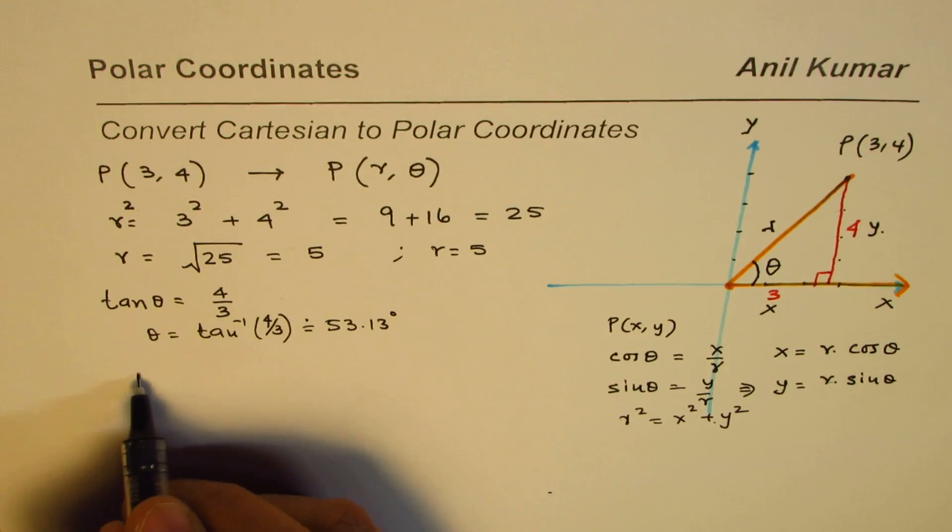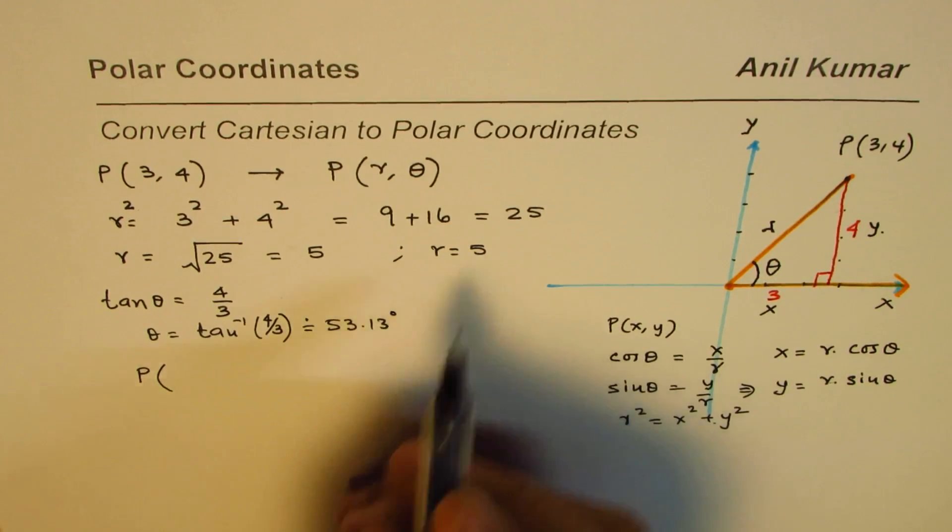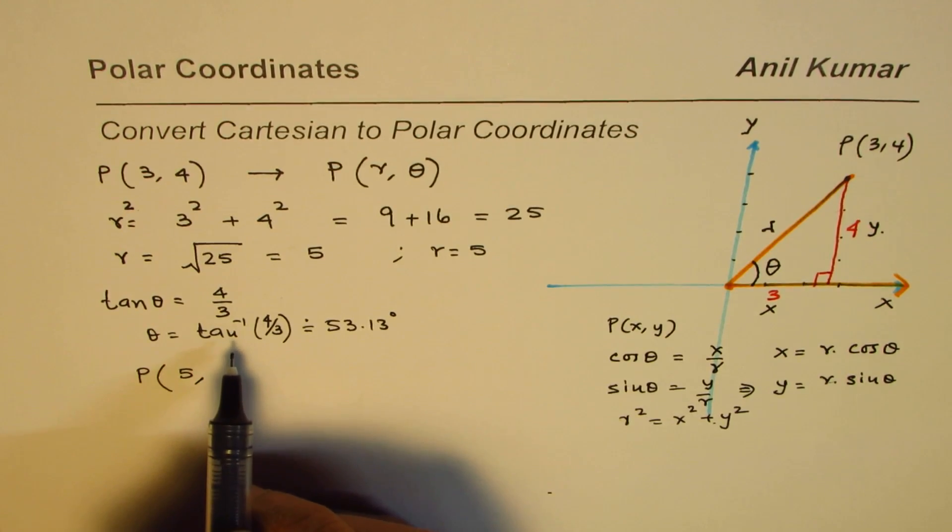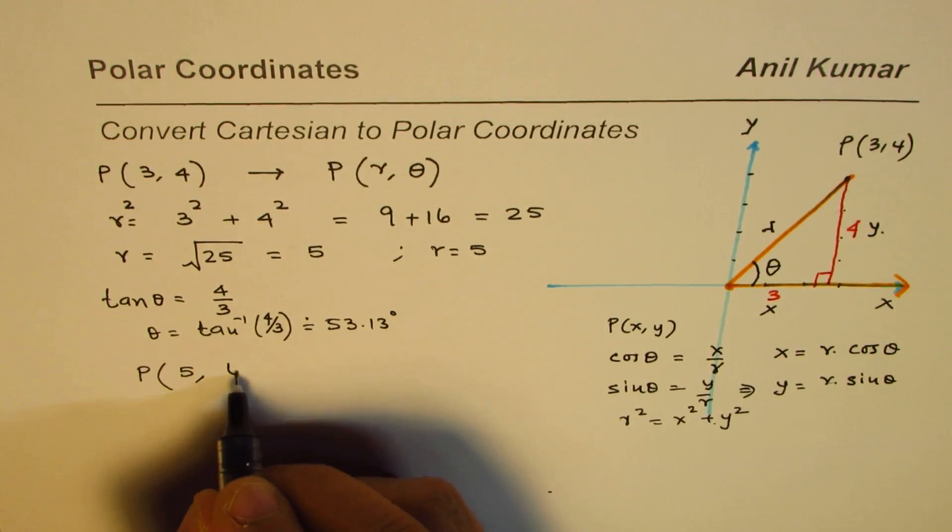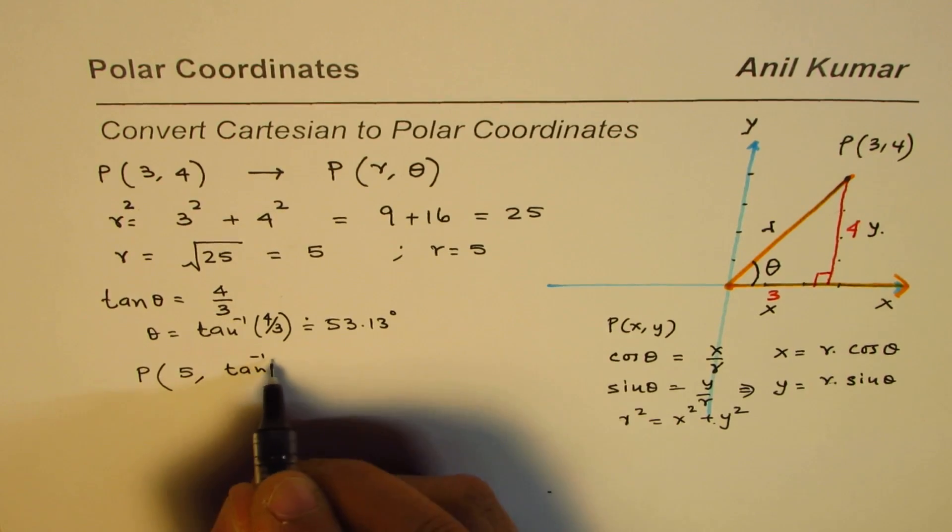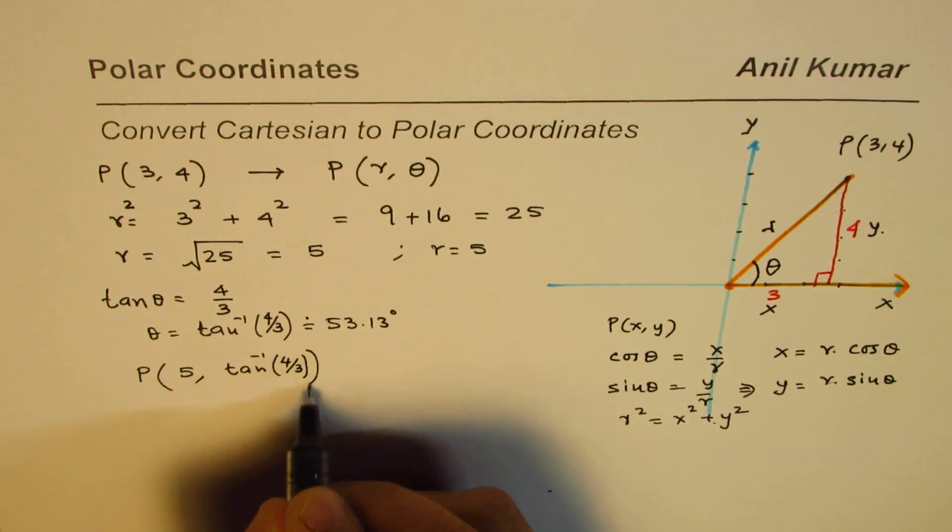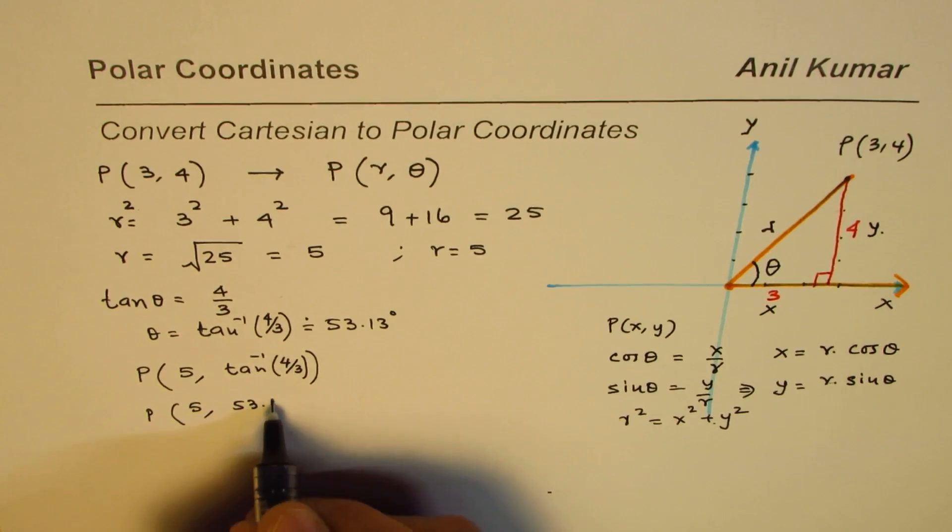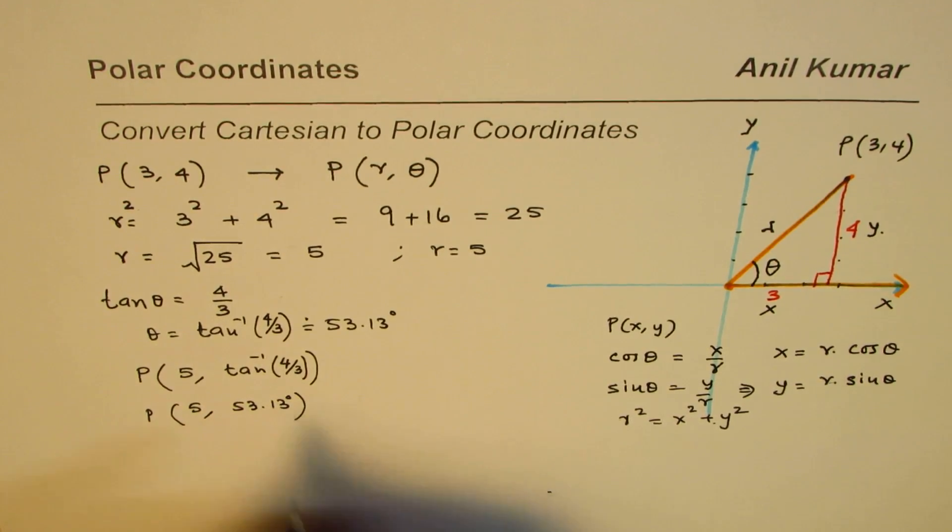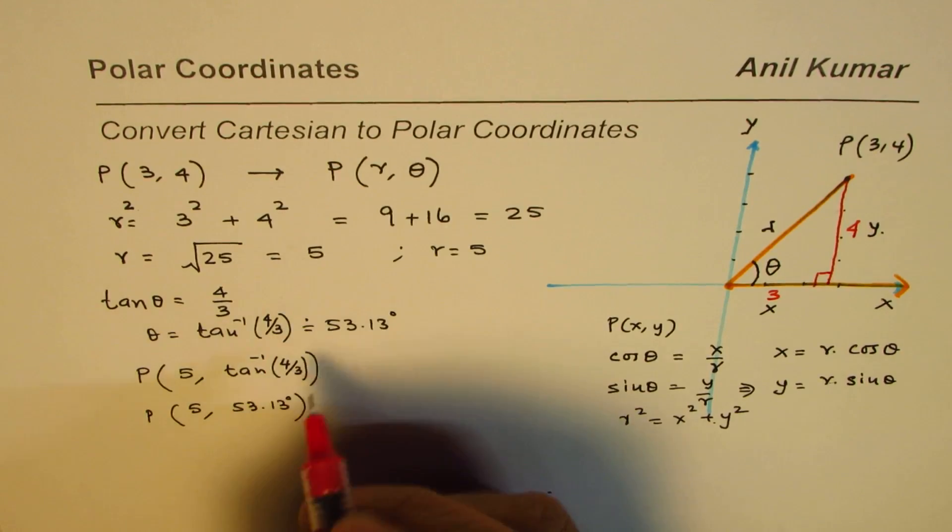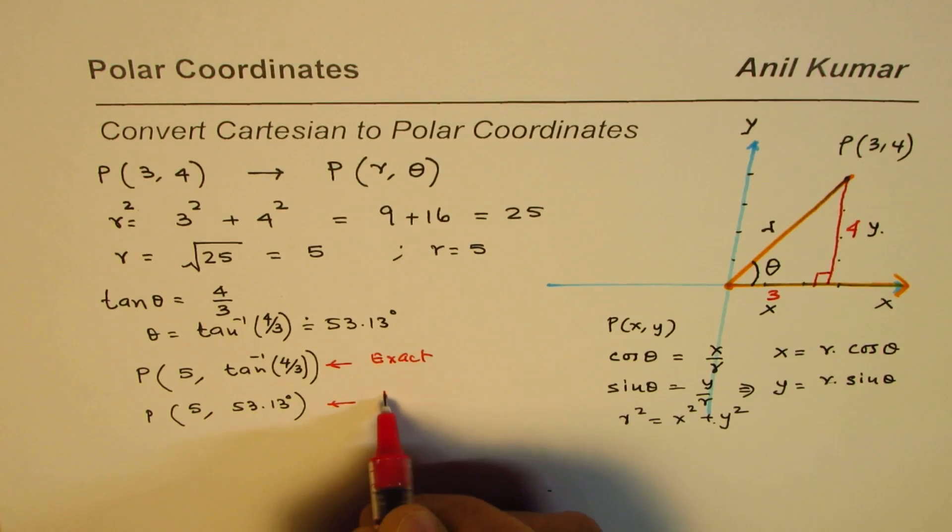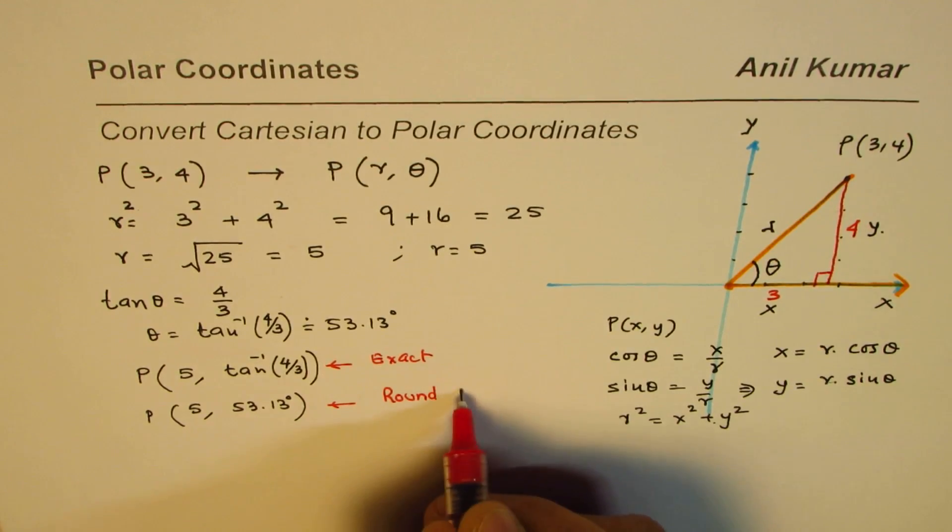So now the answer could be written as point P, r value is 5. So it is actually, if the answer is to be written in exact values, we prefer to write this as tan inverse of 4 over 3. But if you want to write it in round values, you could write this as 53.13 degrees also. So that is your exact value. And this one is round to hundredths.